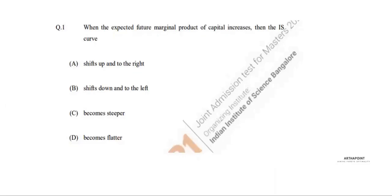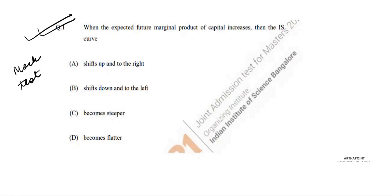This is question one of the IIT exam 2021. We are going to cover a lot of such questions as part of a mock test. This question talks about the shifting of the IS curve, and we should be knowing all the reasons that lead to the shift of the IS curve, so we will be covering more reasons also.